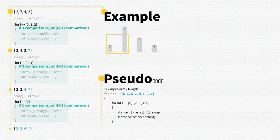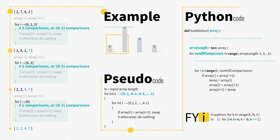Now that we understand the pseudo code, let's translate it into real code. It doesn't matter what language you're using because the logic stays the same — we'll use Python as an example. Note that the input array type is a list of real numbers, and since bubble sort is an in-place algorithm, we don't need to return anything.